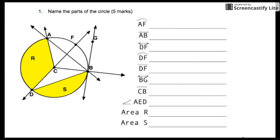Okay, question number one. Name the parts of the circle. So the first thing we have is an arc, AF. So that's this arc here. So arc here, A to F. Okay, so that's an arc.